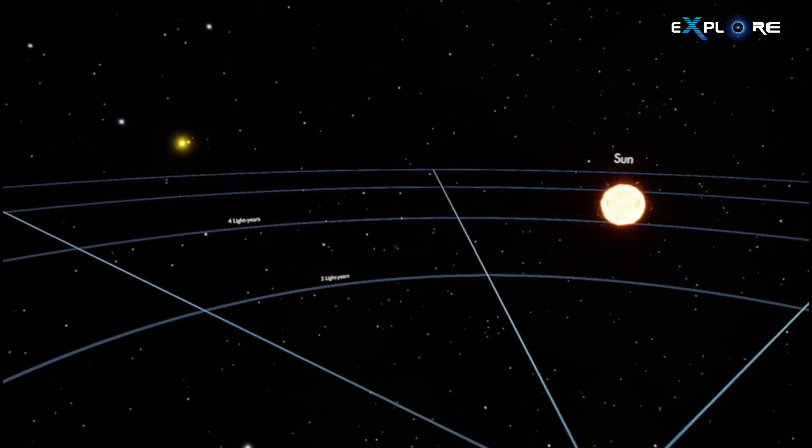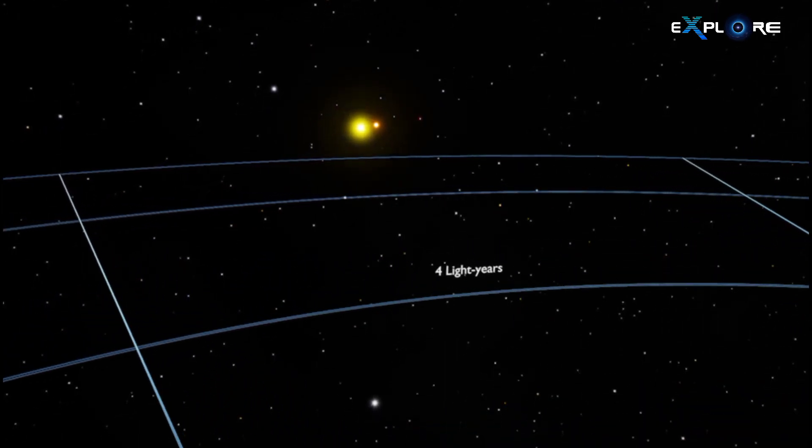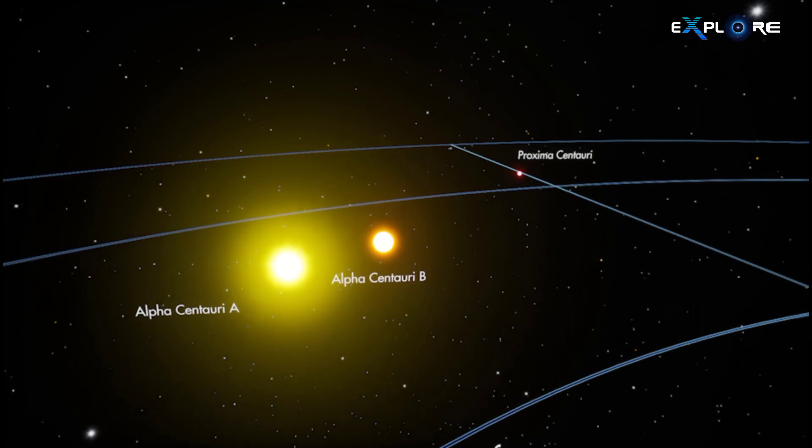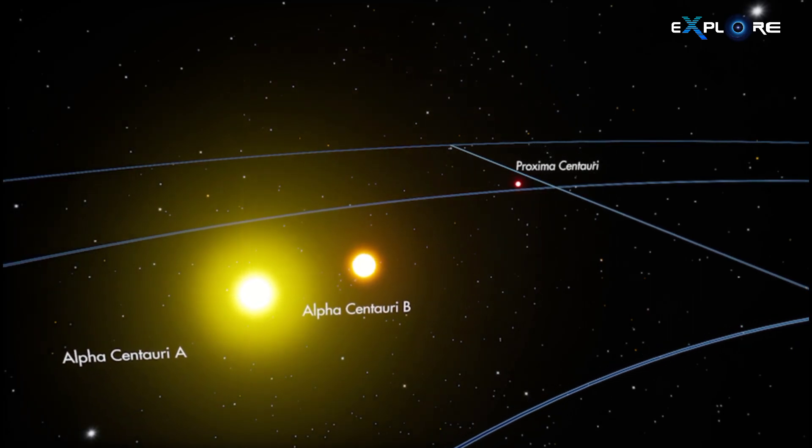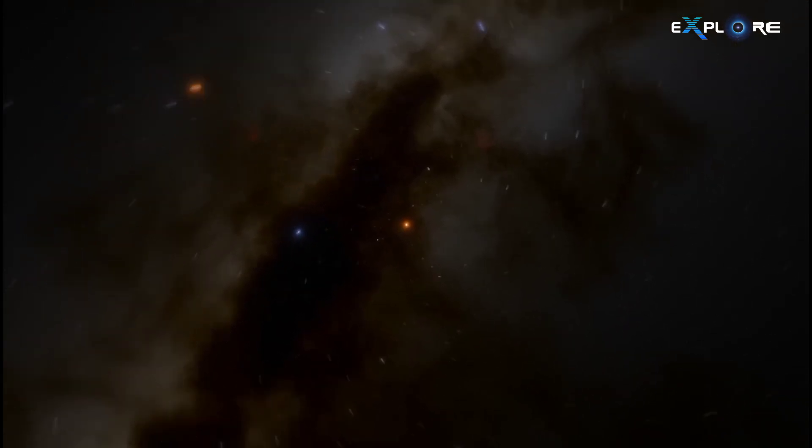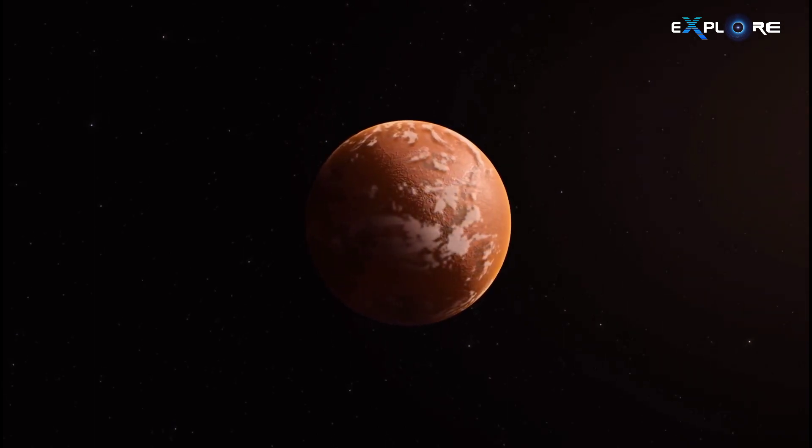The Alpha Centauri system is unique, consisting of three stars: Alpha Centauri A, Alpha Centauri B, and Proxima Centauri. The latter, Proxima Centauri, is the one we're most interested in because it's closest to us and has a big influence on Proxima B.